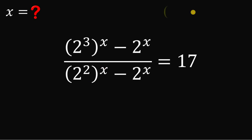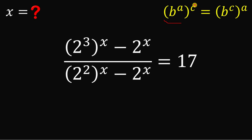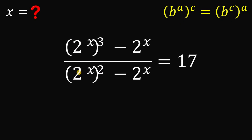Now let's use this law of exponents: if we have b raised to the power of a, raised to the power of c, this can be written as b raised to the power of c, raised to the power of a — we can interchange their exponents. Therefore, 2 raised to 3, raised to the power of x, becomes 2 raised to x, raised to the power of 3. And 2 raised to 2, raised to the power of x, becomes 2 raised to x, raised to the power of 2.